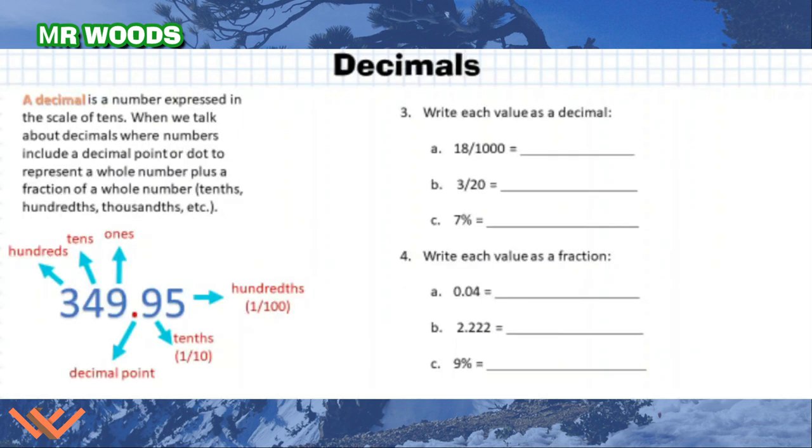Let's look at decimals. So a decimal is a number expressed in the scale of tens. When we talk about decimals, where numbers include a decimal point or dot to represent a whole number, plus a fraction of a whole number where tens, hundredths and thousandths, et cetera, on out. And then I'm looking at this. So I have this tenths, remember the place value chart, hundredths. There's my decimal point, ones, tens, and hundreds.